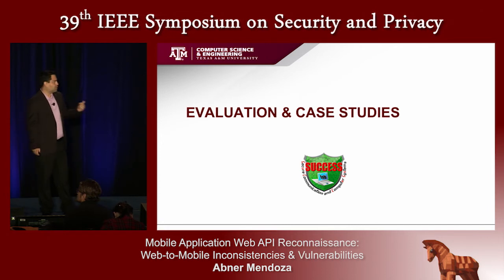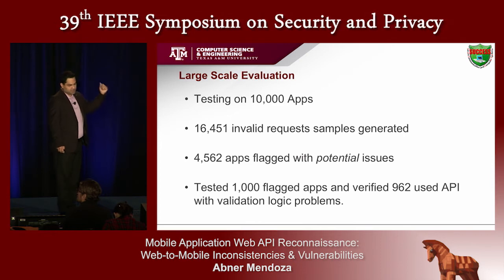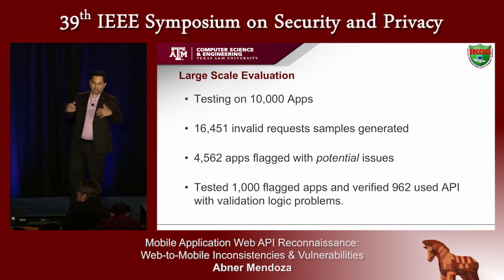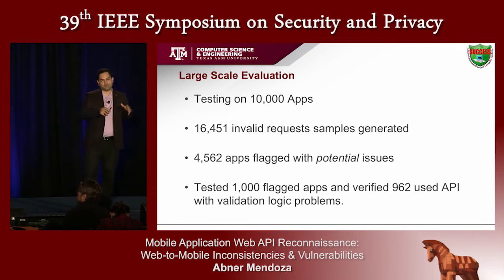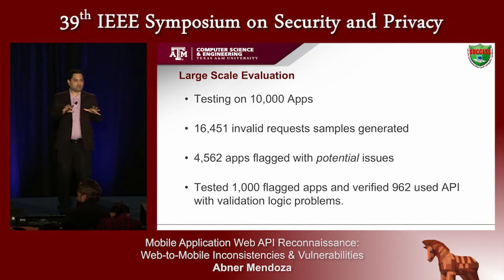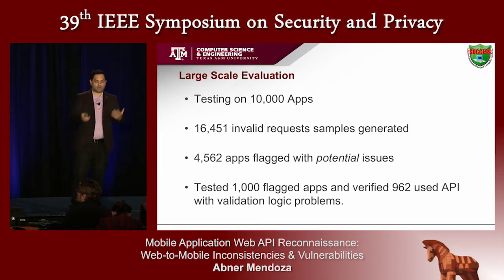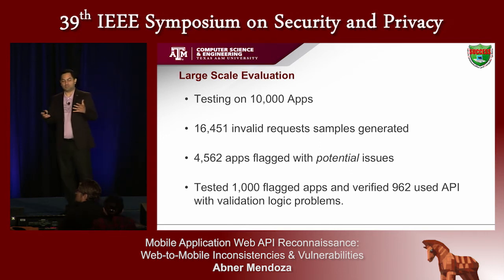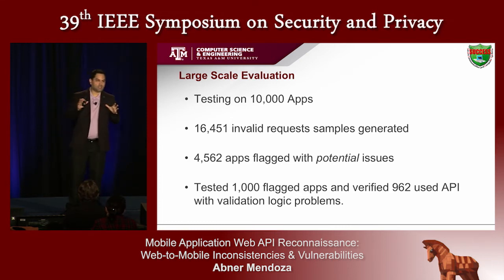Our tests consisted of 10,000 apps in a large-scale evaluation. We were able to generate over 16,000 invalid requests — multiple per app. Our system identified over 4,500 apps with potential issues. We then manually tested a thousand of these apps and verified that 962 of them had some API validation logic problem, with varying degrees of severity.